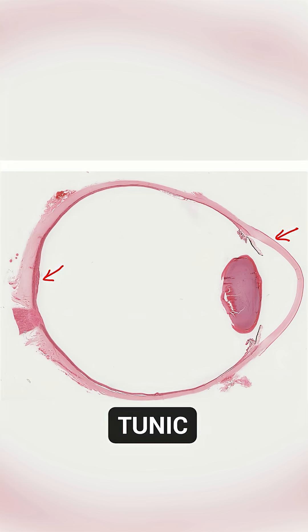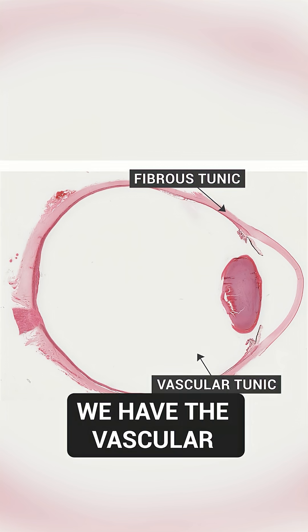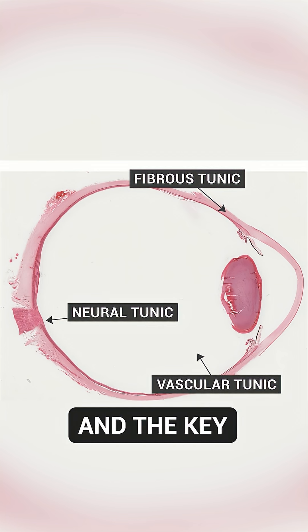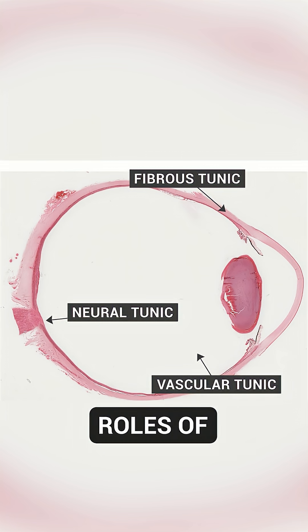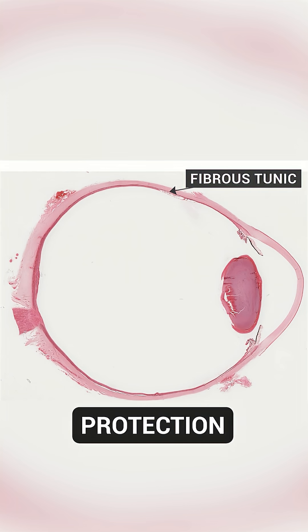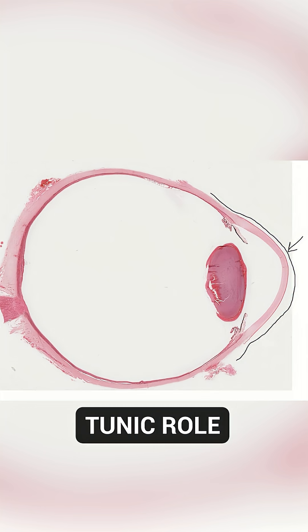This is going to be our neural tunic. So fibrous, then we have the vascular, and we have the neural tunic. The key roles of these tunics: for the fibrous one, it's going to be protection and shape — giving the eye this round shape. We have a little bit of an angle here; this is the fibrous tunic's role.